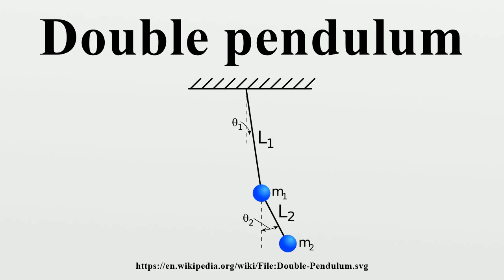Chaotic motion: The double pendulum undergoes chaotic motion and shows a sensitive dependence on initial conditions. The image to the right shows the amount of elapsed time before the pendulum flips over, as a function of initial conditions. Here,